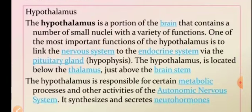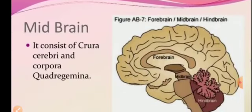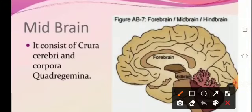Talking about the midbrain — it consists of the crura cerebri and corpora quadrigemina. It is a small region. The superior colliculi have centers for sight, and the inferior colliculi have centers for auditory reflexes. The main function of the midbrain is to control reflex movements.